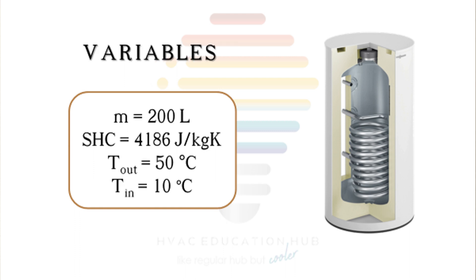This is the mass of our tank. We have specific heat capacity of water, which is 4186 joules per kilogram per kelvin. We want target temperature in tank of 50 degrees Celsius, and our main water supply temperature is 10 degrees Celsius. We have all data to calculate how much energy we need.